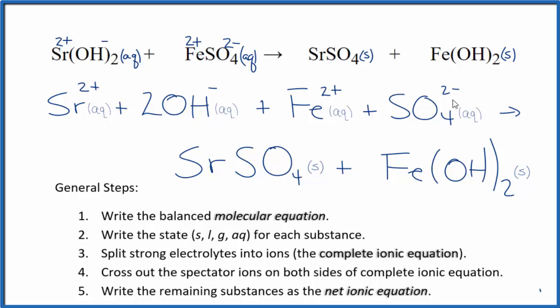You'll note that charge is conserved. If you add up all these charges here, 2+, 2 times 1 minus, 2 plus, 2 minus. And in the products, these are all neutral compounds, so their charges all add up to zero. Charge is balanced or conserved, and if you count the atoms up, they're balanced as well.